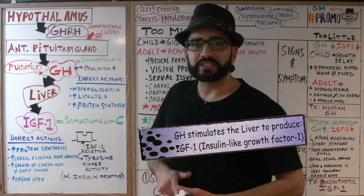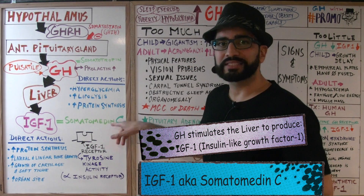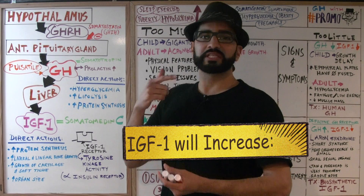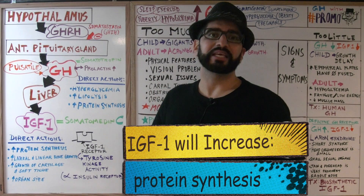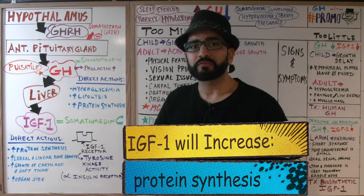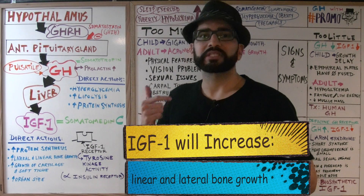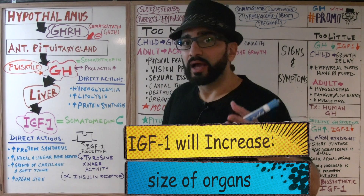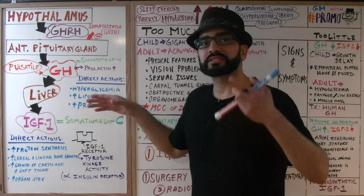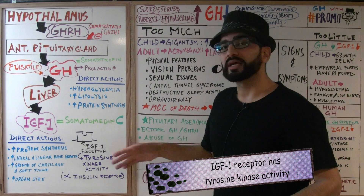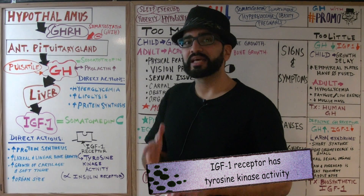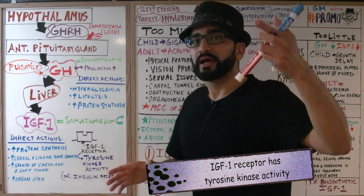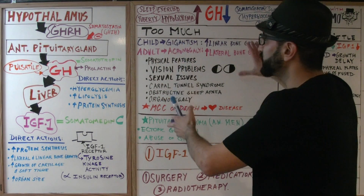Growth hormone stimulates the liver to produce insulin-like growth factor 1 (IGF-1), also called somatomedin C. IGF-1 increases uptake of amino acids, leading to increased protein synthesis and increased muscle mass. It's also critical for a child's growth: it increases lateral and linear bone growth, cartilage and soft tissue growth, and organ size. IGF-1 acts on the IGF-1 receptor, which has tyrosine kinase activity — very similar to the insulin receptor.